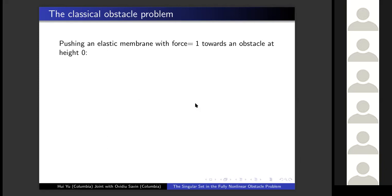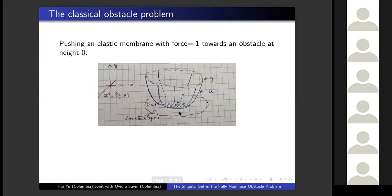In this problem, we are physically modeling a very simple situation: we're just pushing an elastic membrane towards an obstacle with a constant force. Omega is some domain in the d-dimensional Euclidean space, and at the height of this domain there's an obstacle you cannot go through. Along the boundary of the domain, we fix some membrane at height G.